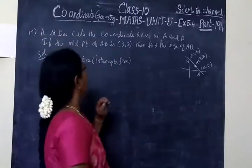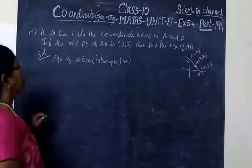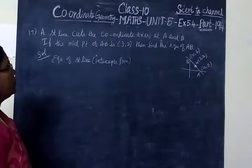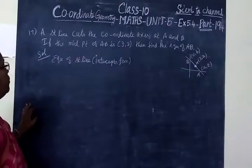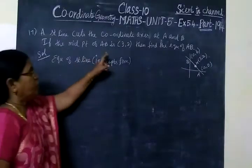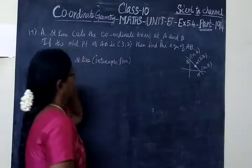Today we are seeing part 194, 17th question. A straight line cuts the coordinate axes at A and B. If this is the midpoint of AB, then find the equation of AB.